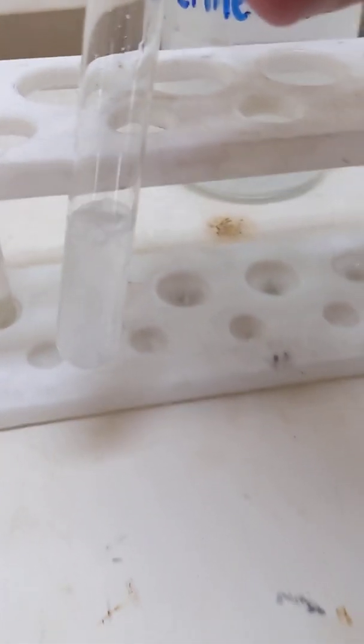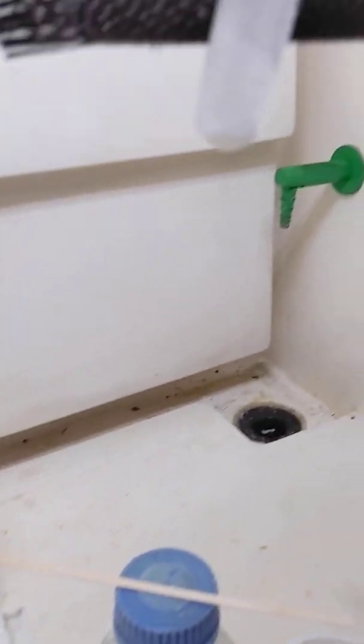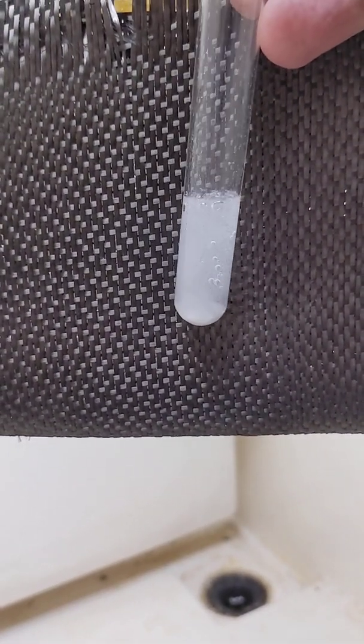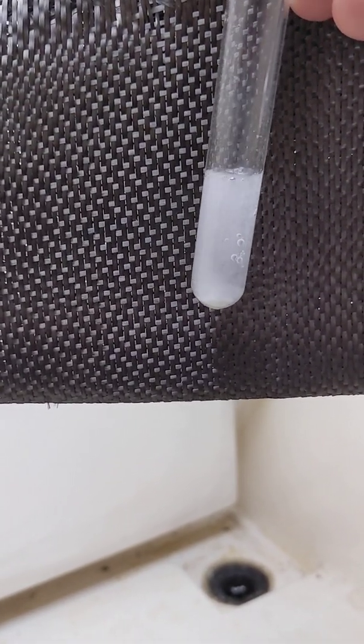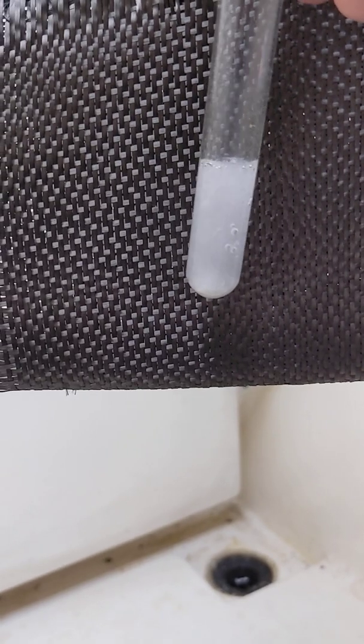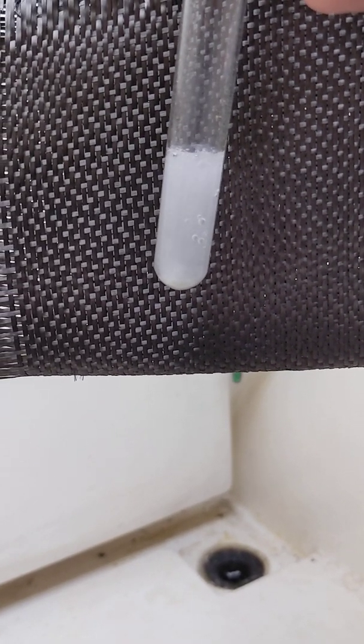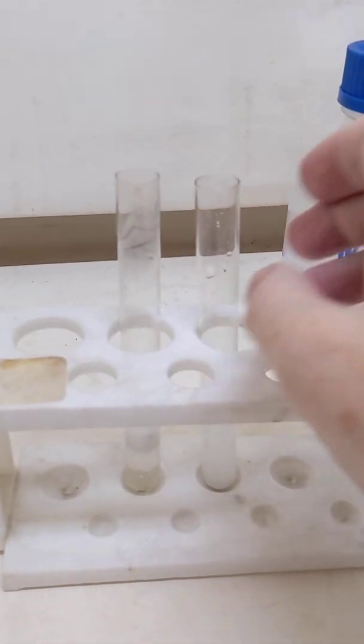Immediately we see some fizzing again, better seen against the dark background. And you might like to identify what this colorless gas is. What test would we use for the gas produced when an acid reacts with a carbonate?